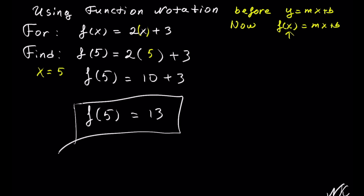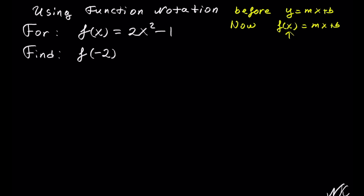In this example we have f of x equals to 2x to the second power minus 1, and we have to calculate f of negative 2. Anytime we see an x in the original function, we will plug in negative 2. So f of negative 2 is equal to the original function 2 times x squared minus 1, and instead of x we are plugging in negative 2.